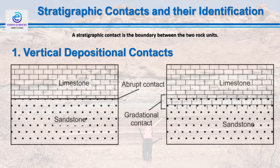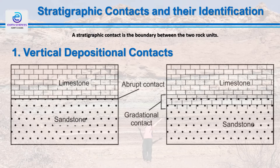Now let's see the vertical depositional contact. When beds are deposited above one another, there is a junction between the two beds, known as a stratigraphic contact. This contact may be conformable or it may be unconformable. A conformable contact indicates unbroken deposition where there is no perceptible break and the sequence is uninterrupted.